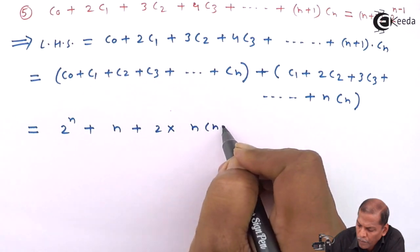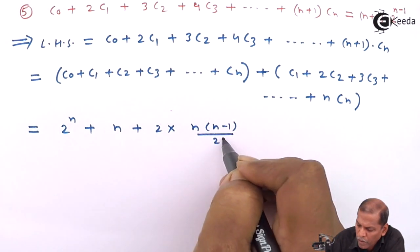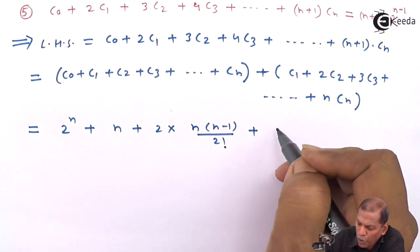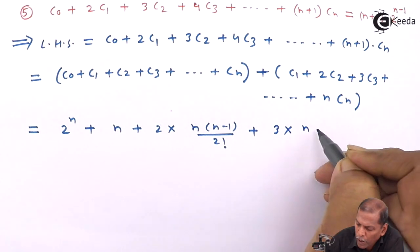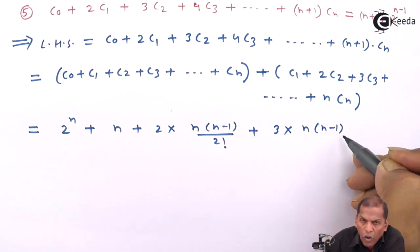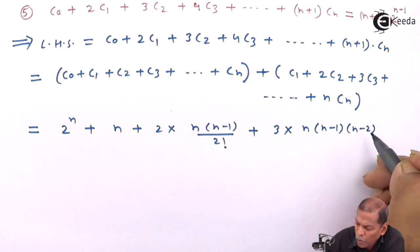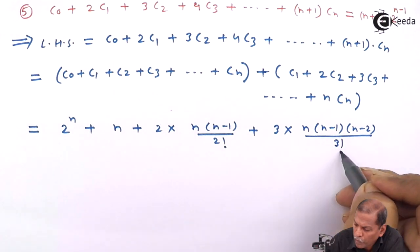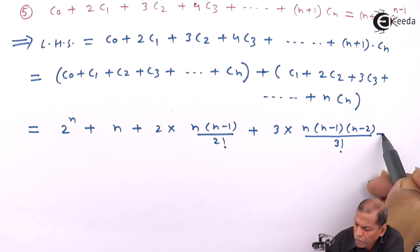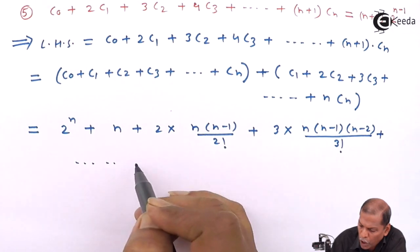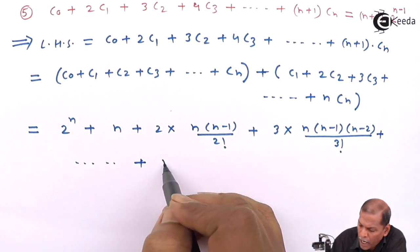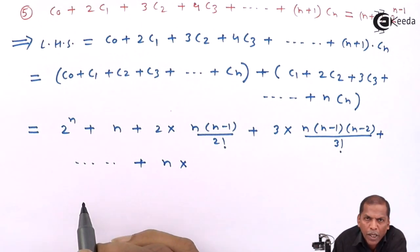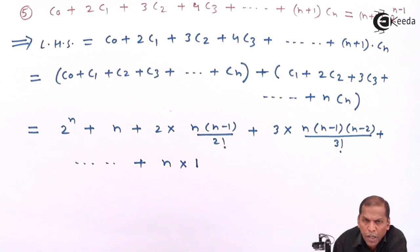Now expanding the remaining terms: 3C₃ gives us 3 into n(n−1)(n−2) upon 3 factorial, plus dot dot, and the last term is n·Cₙ, which gives us answer 1.